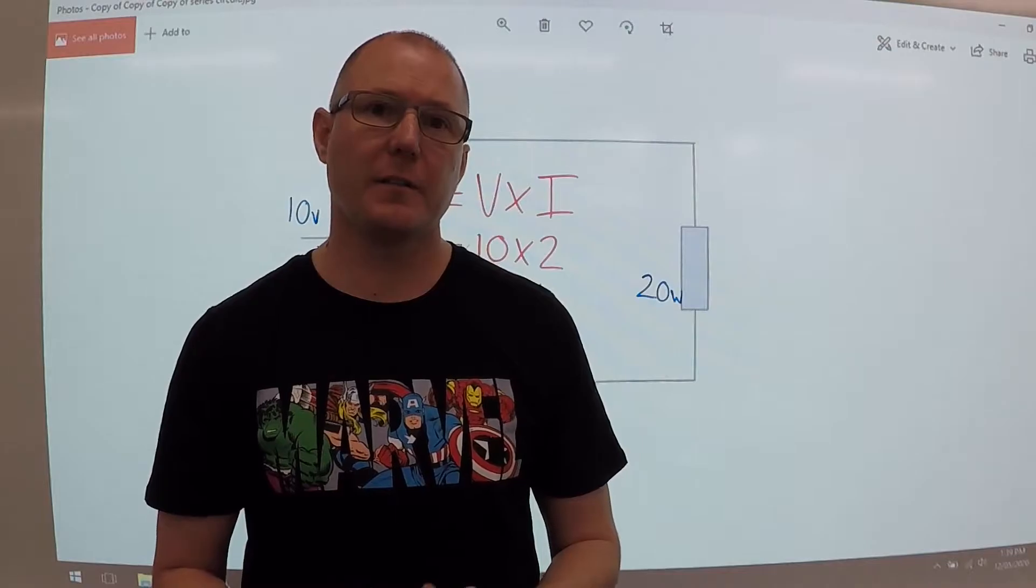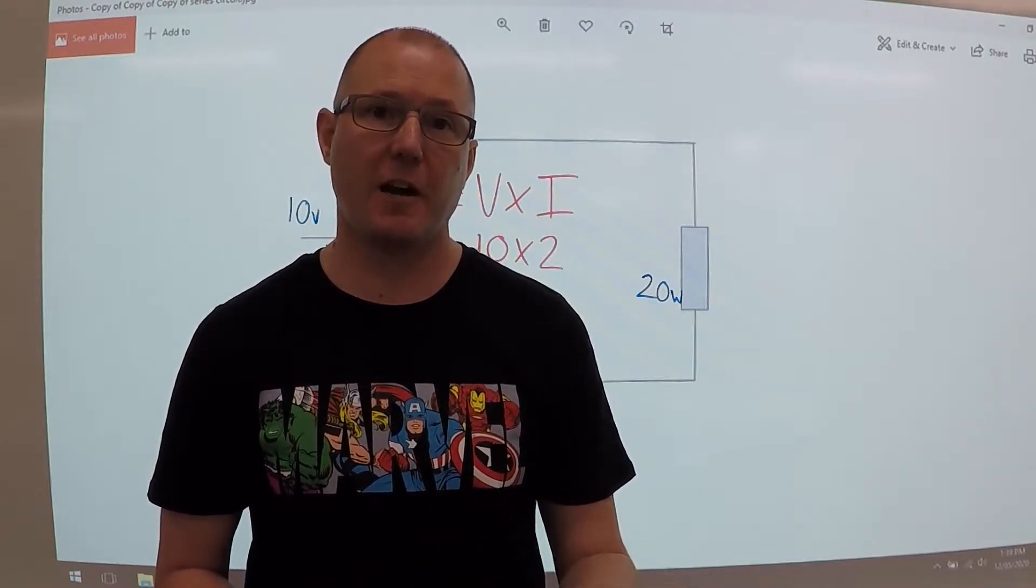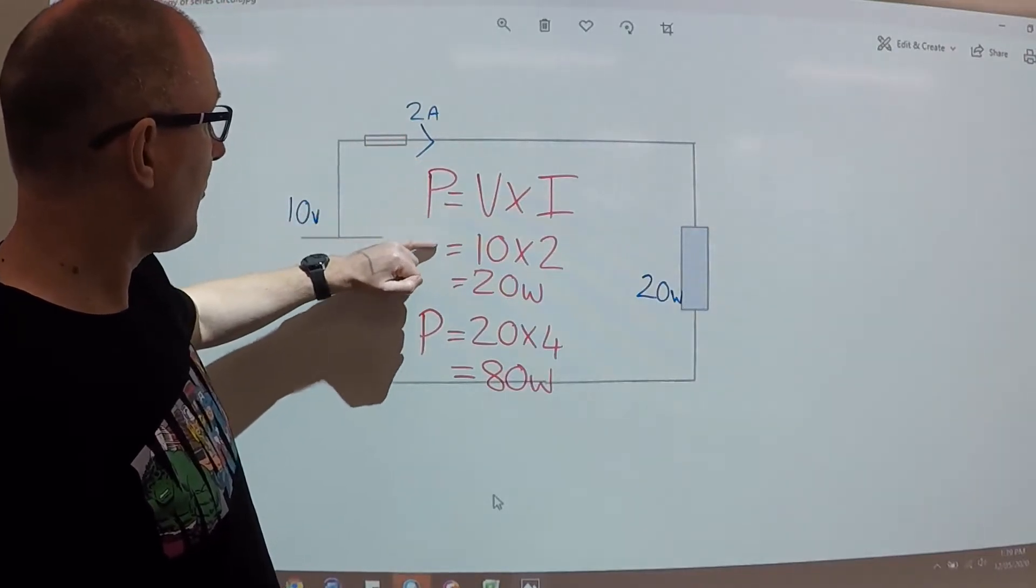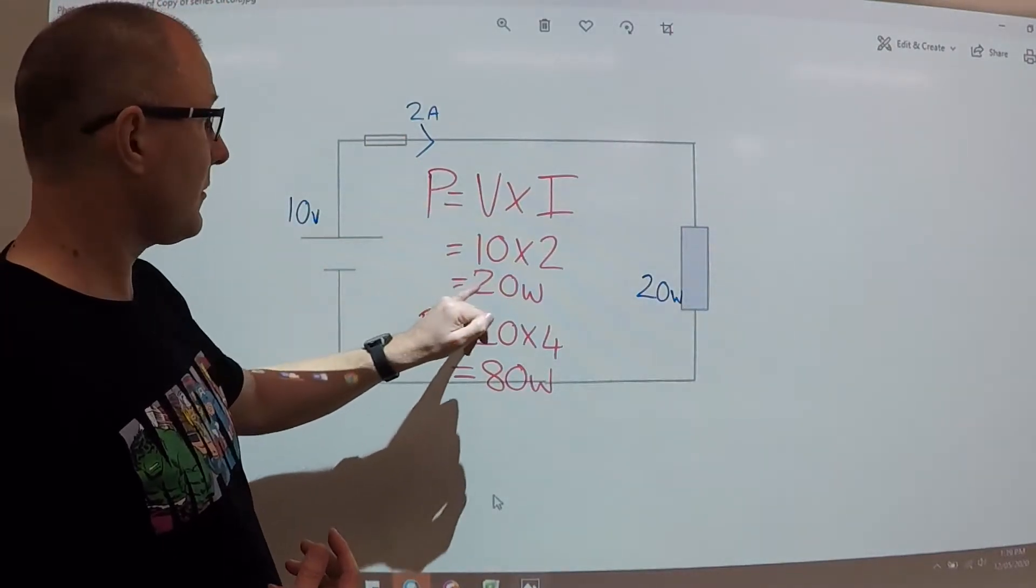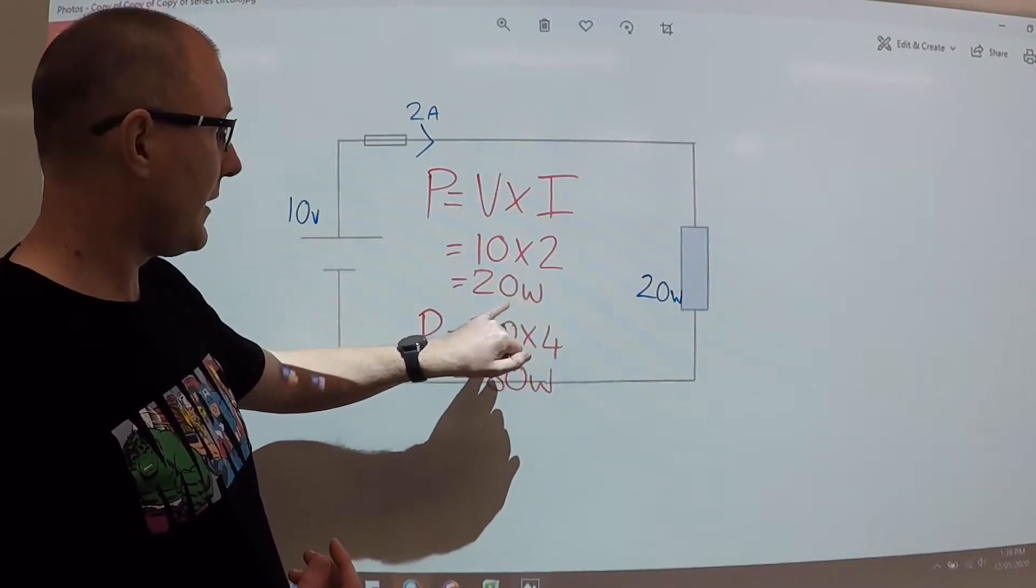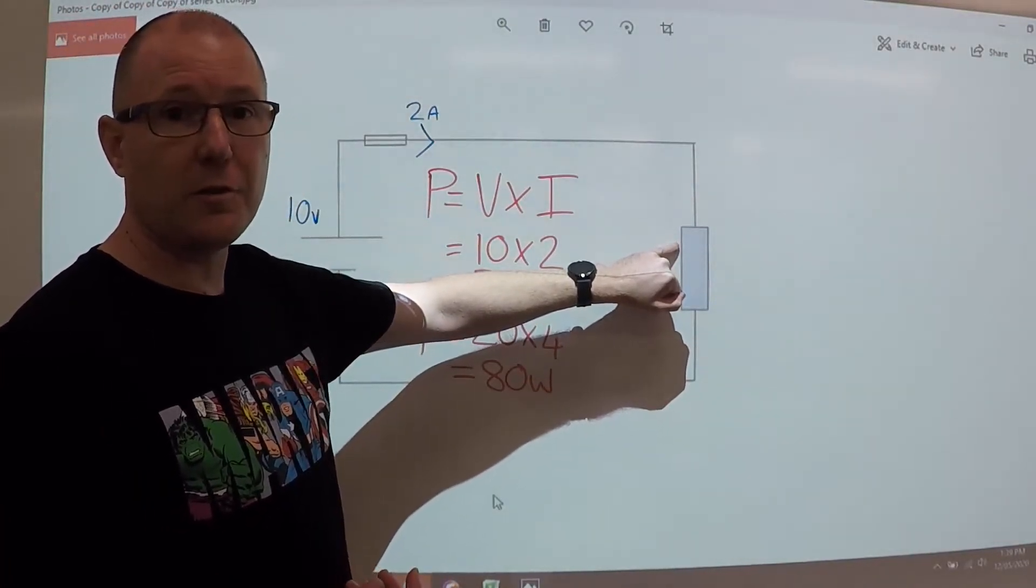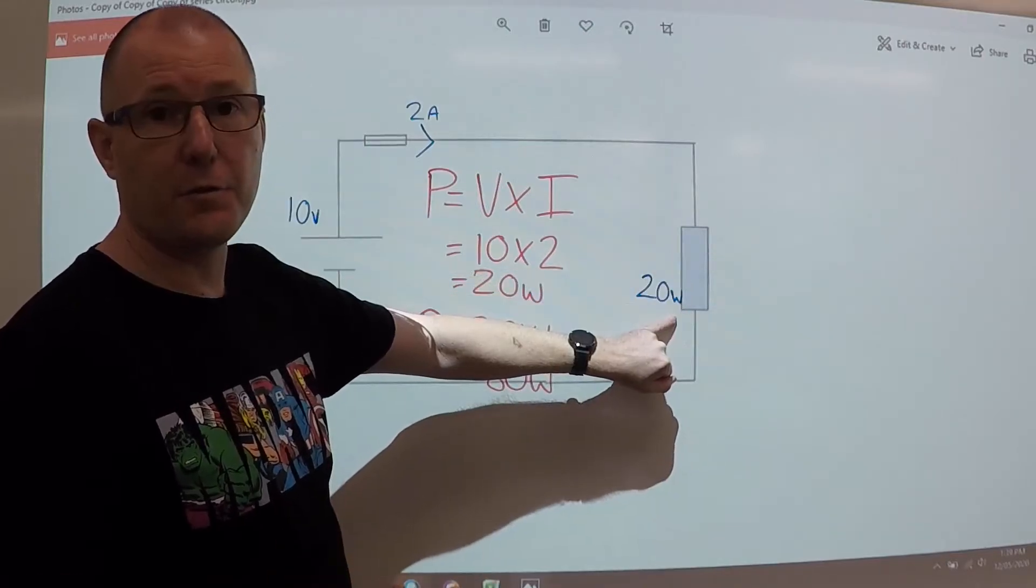How power is affected with the change of current. So if we start off with our 2 amps, we can work out 10 volts times the 2 amps equals 20 watts being drawn or dissipated through the resistor.